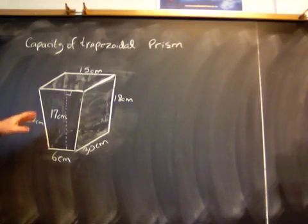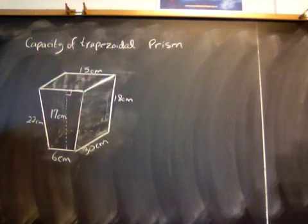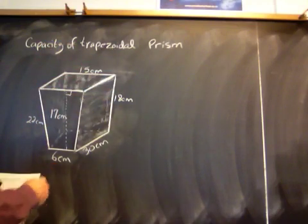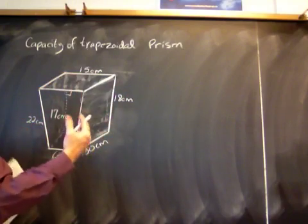Some students have problems with this example. We're trying to find the capacity of a trapezoidal prism, which means the volume of a trapezoidal prism. Why is it called a trapezoidal prism? Because the trapezoid defines its shape.